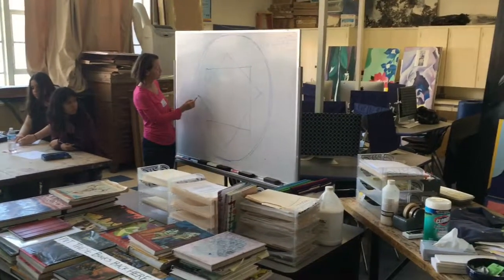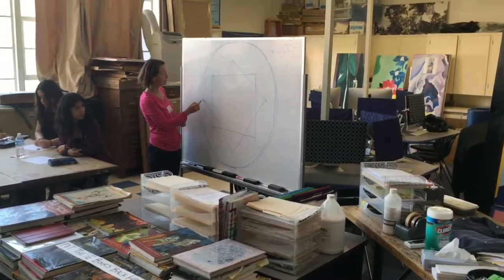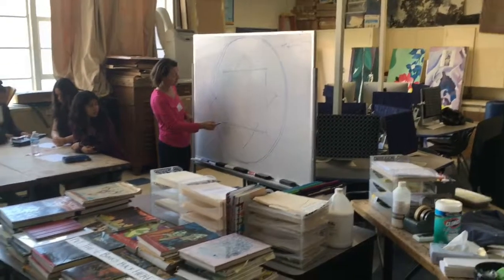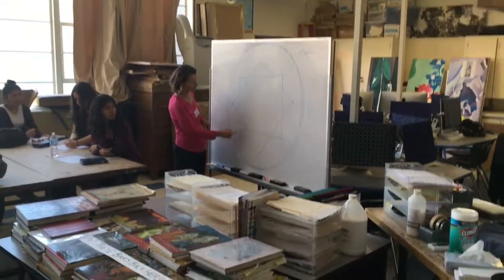Alright, then this would, for instance, to the outside of the gem, would just continue on. This would continue on this way. This would continue on this way.